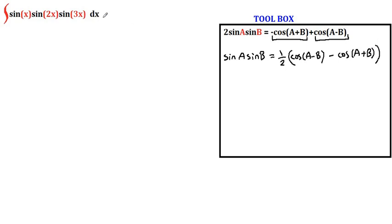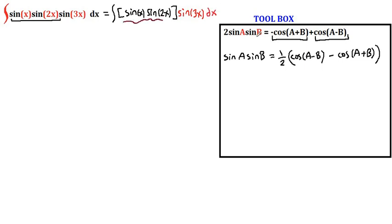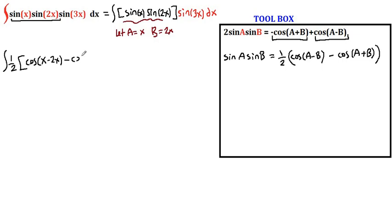Now we can use this. Let's rearrange our integrand by grouping the first two terms. So our integral is sine x times sine 2x, and we have sine 3x outside of the group. Here we can apply the sum identity, letting a equal x and b equal 2x. So our integral turns into one half times cosine of x minus 2x, minus cosine of x plus 2x, and we have sine 3x outside of the parenthesis.